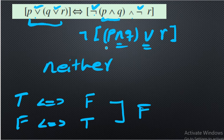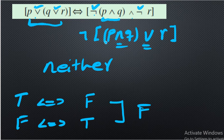To be a tautology, left hand and right hand must be the same. To be a contradiction when connected by biconditional, one must be the negation of the other — but neither condition applies here, so the result is neither.